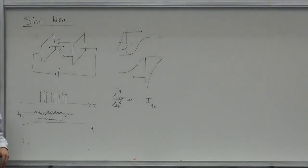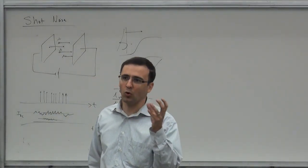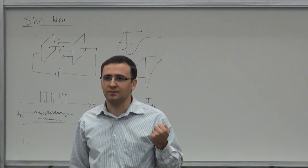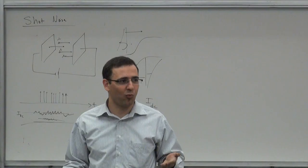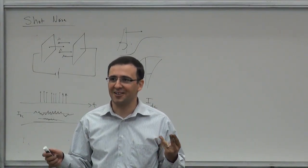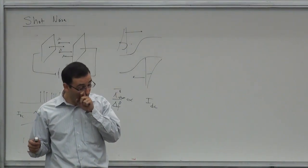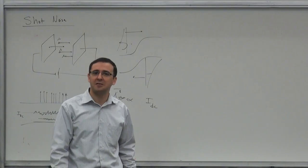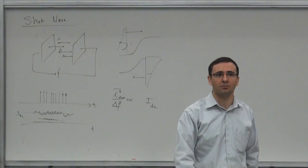What are charge carriers? They are electrons, or holes and electrons combined. What is the charge of an electron? Q — 1.6 times 10 to the minus 19 Coulombs. Now, what if your charge carriers were, instead of being on the order of 10 to the minus 19 Coulombs, they were like 1 Coulomb?